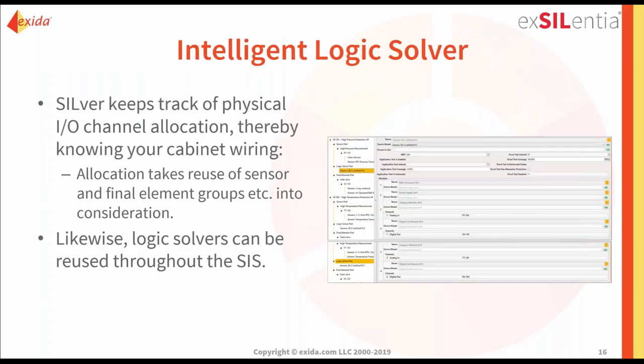The intelligent logic solver feature tracks physical IO channel allocation, so the tool essentially knows what your cabinet wiring should look like. For example, if you have redundant transmitters, you may decide each input goes to a separate input module — if you specify that, the tool takes it into consideration. Logic solvers can be reused throughout the various safety instrumented functions or the entire safety instrumented system.